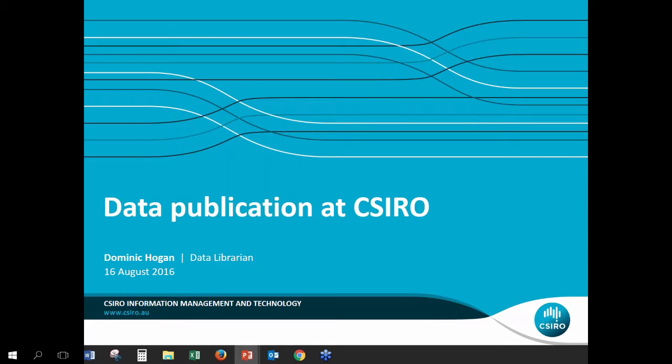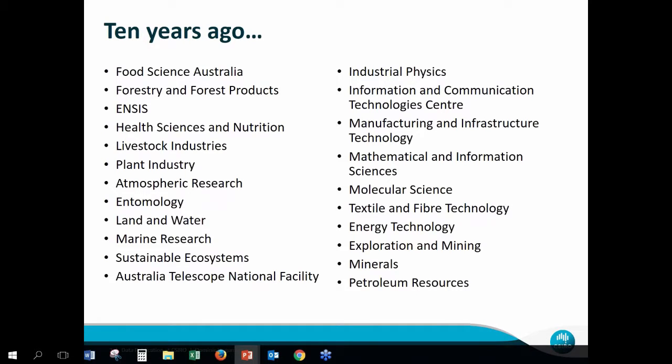G'day everyone, thanks for having me along. Just to explain the broader context of data in CSIRO, I have this slide from what things looked like about 10 years ago. We had a number of different divisions at the time, and each of these pretty much ran their own show. They got their portion of CSIRO's funding, had their own departments and their own libraries. There was collaboration between divisions and a CSIRO library network, but there were varying standards of information management throughout the organization, just due to the nature that they were run separately.